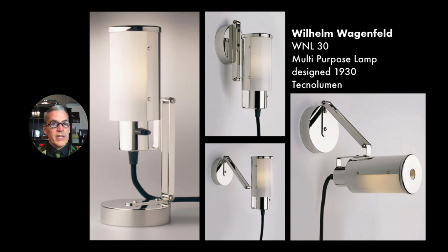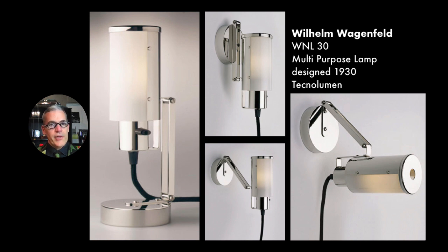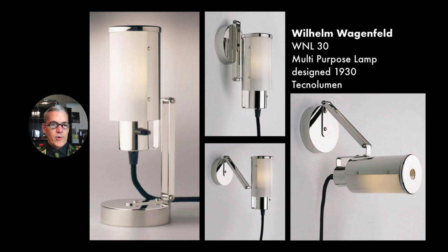This is a design of Wagenfeld's that I love, so I want to show it to you — it's a table lamp, or a wall sconce, or a task light. It has multiple positions and it looks good in all of those positions. Most things that move have a primary position where they make sense visually, and then secondary positions where they look sad or compromised. This is a really lovely example of a very difficult thing to do when designing.